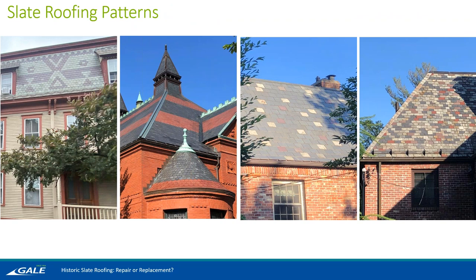Here are a few examples of the different slate roofing patterns you might see. We're probably all familiar with your traditional rectangular shaped slate. Slate can also be cut into a different exposed edge — here we're seeing some scalloped edges on the slate. In that second image, you're seeing that bright red slate that typically comes from New York.